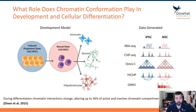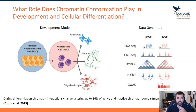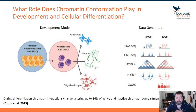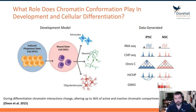To look at this model system, we have generated RNA-seq data to look at the transcriptional activity of these two cell types. We have ChIP-seq to look at the enhancer-promoter repertoire and key pluripotency maintenance factors. And then we have our Omni-C as the Hi-C approach to look at genome-wide contacts, and then we'll dive into Hi-CHIP, the protein-directed view of interactions.